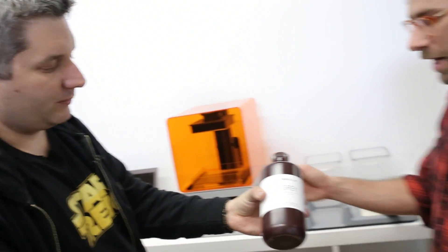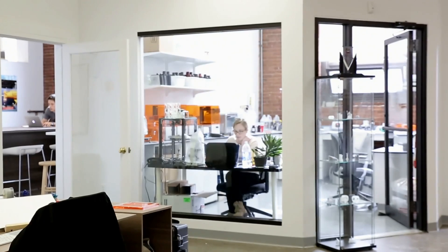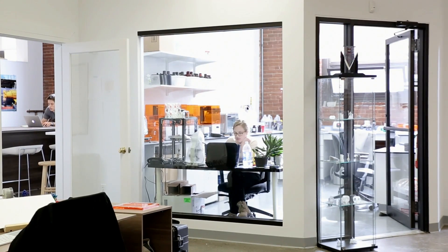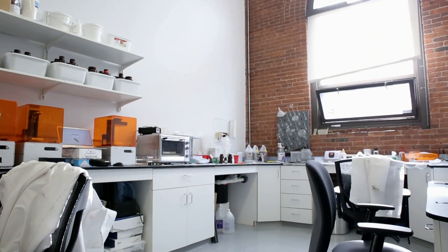This is our resin. We developed this in-house. It is an acrylate photopolymer. It's a kind of material that when you expose it to a certain wavelength of light, it hardens. We're going to take a look at our material science lab. This is where the important work of engineering the materials that we use in the Form 1 takes place.